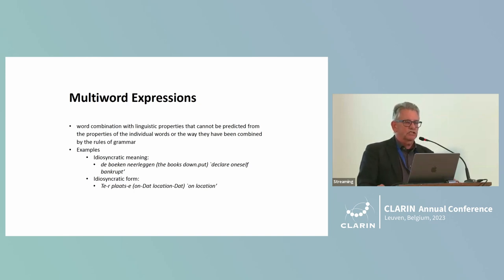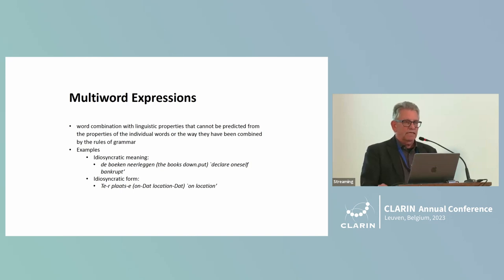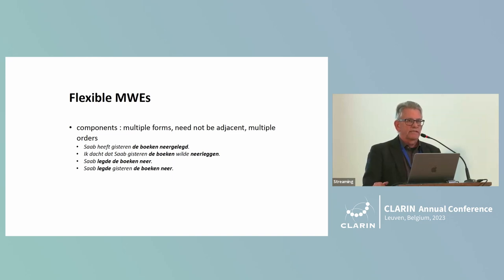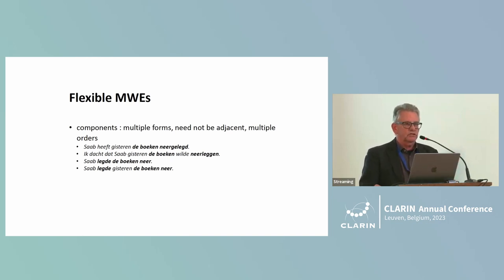For example, a multiword expression can have an idiosyncratic meaning. In Dutch, the expression 'de boeken neerleggen,' literally 'to put down the books,' means to declare oneself bankrupt. Or they can have an idiosyncratic form. The Dutch expression 'ter plaatse' literally means 'on location' — semantically nothing wrong — but it has exceptional idiosyncratic case endings on the preposition and on the noun that cannot be accounted for by normal rules of Dutch grammar. Many multiword expressions are flexible in that their components can occur in multiple forms.